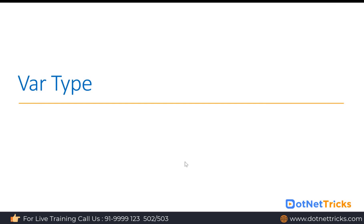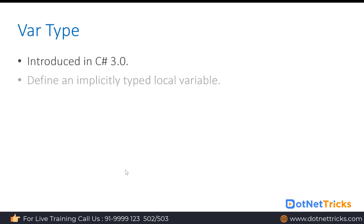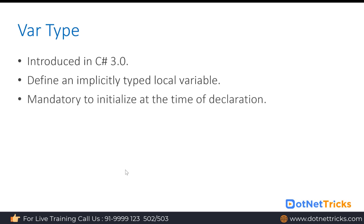Next, the var type in C#. The var type was introduced with C# language version 3.0 and it is used to define an implicitly typed local variable. Whatever value you assign to a var type variable, it will become that type — if you assign a string value, the var variable becomes a string. It is mandatory to initialize the value to a var type variable at the time of declaration. You cannot declare the variable first and assign the value later.